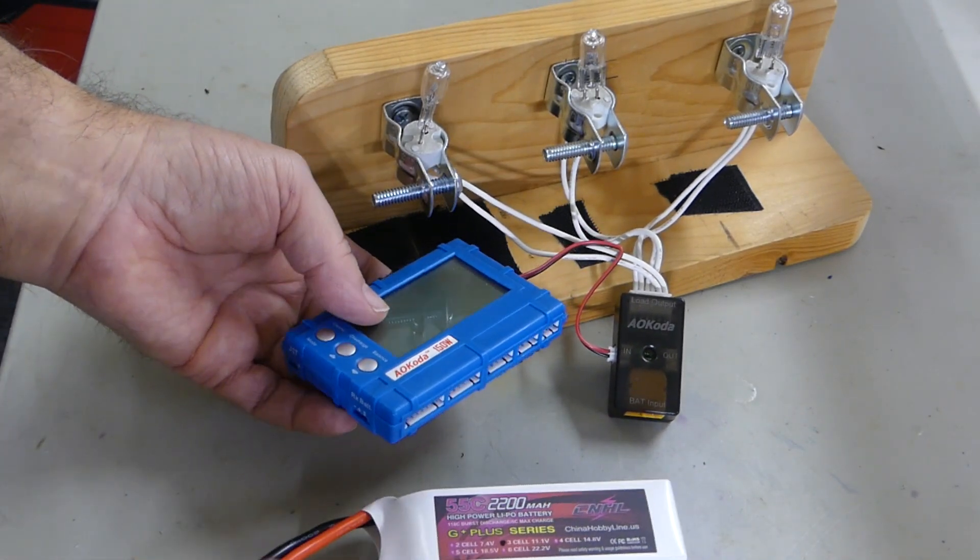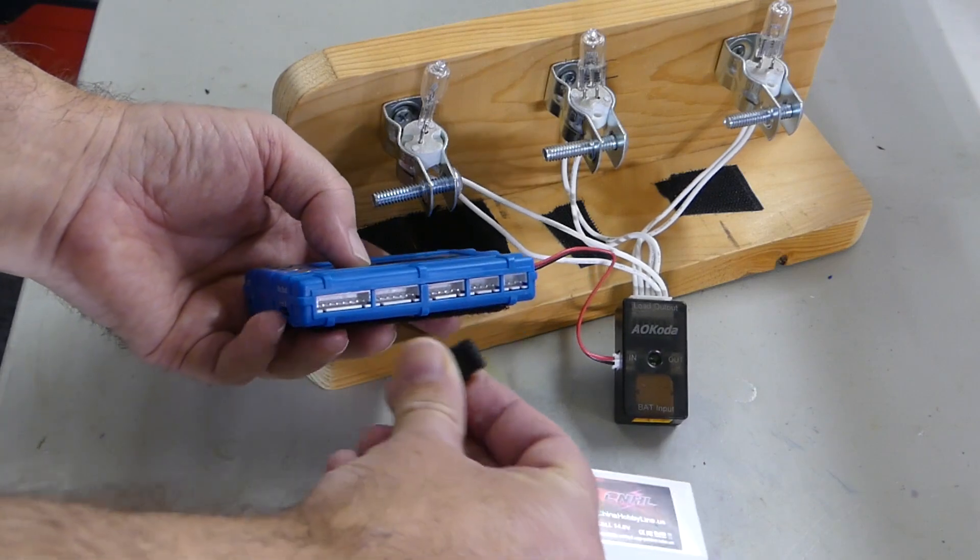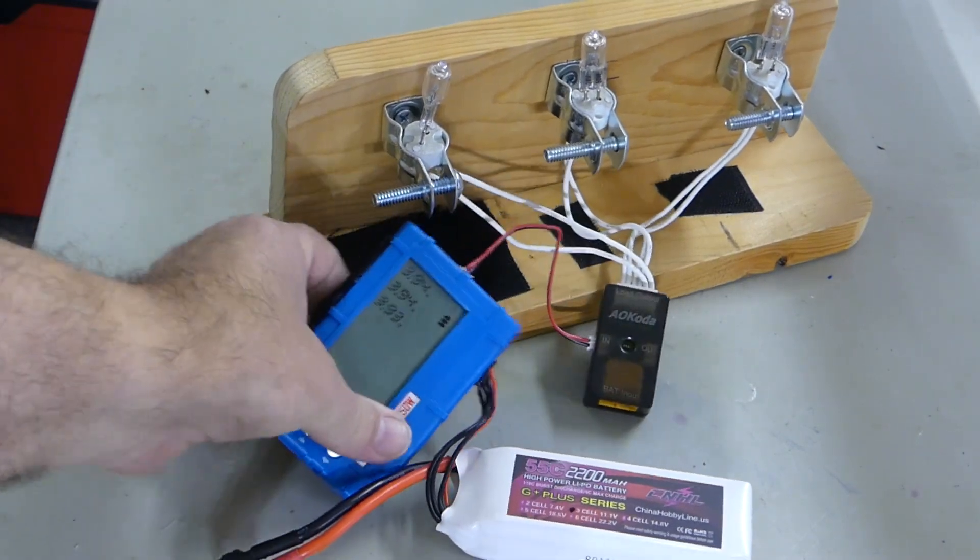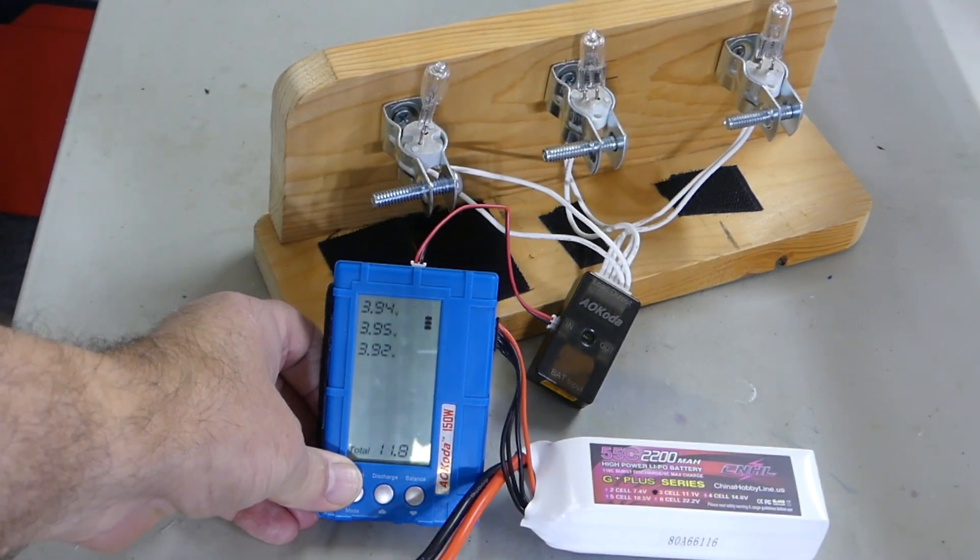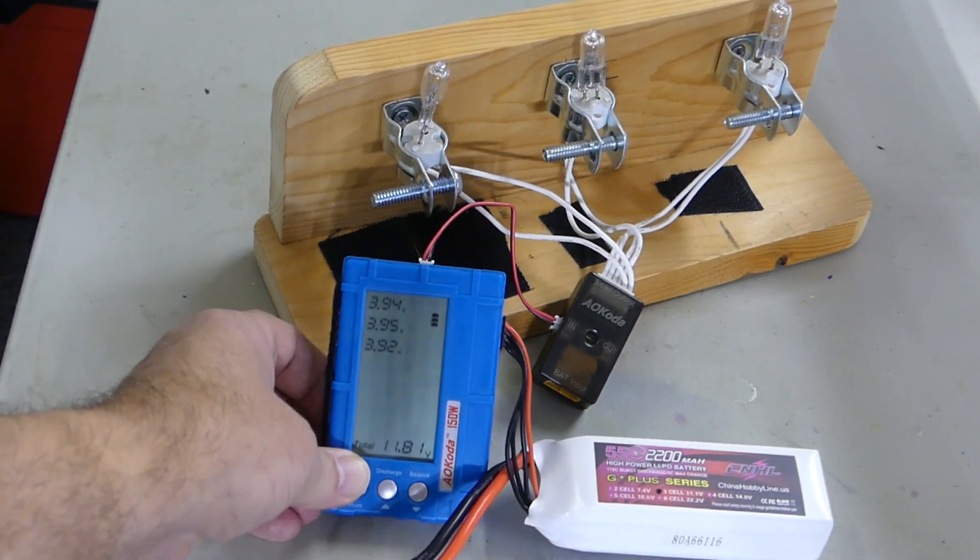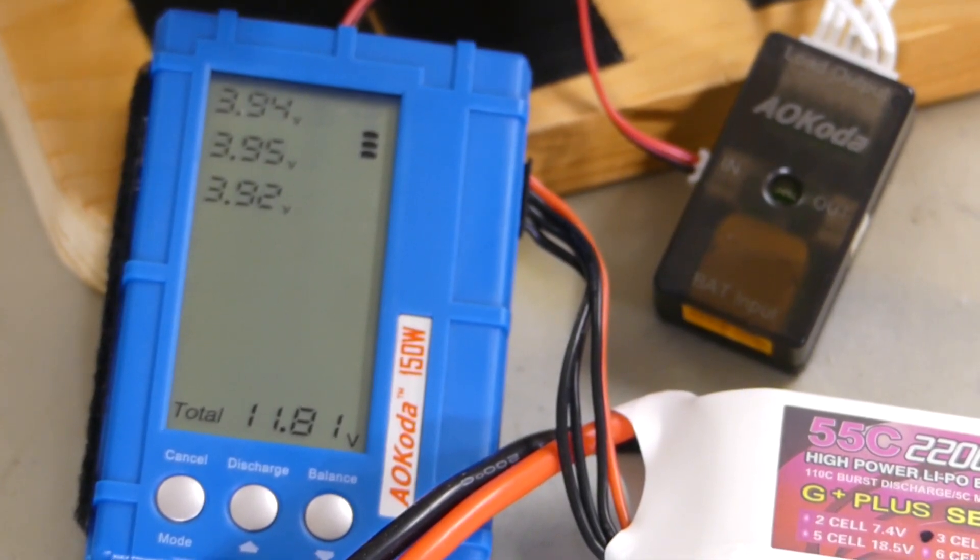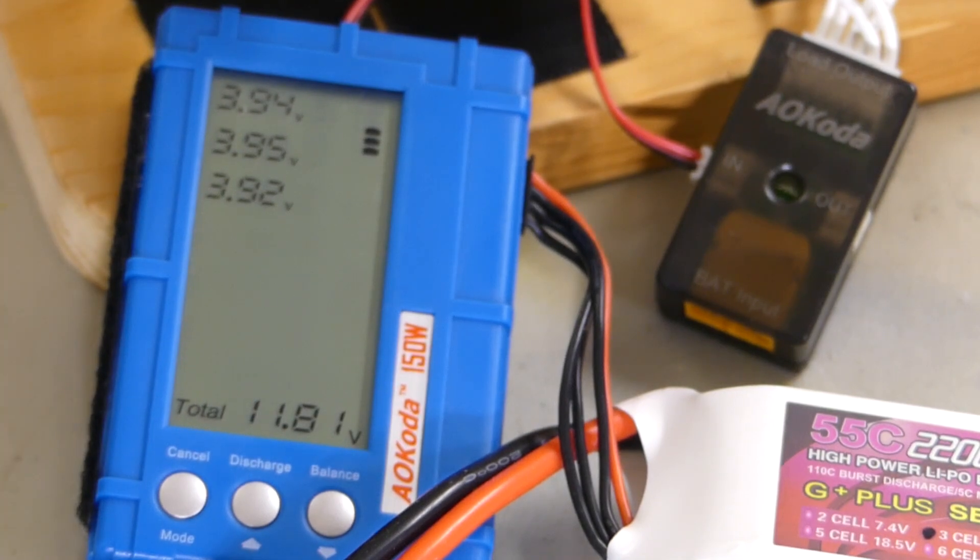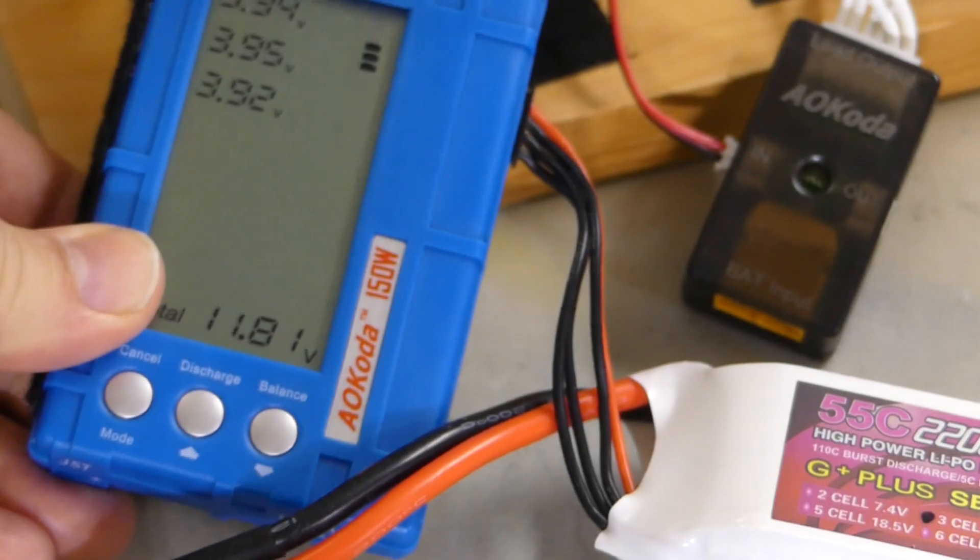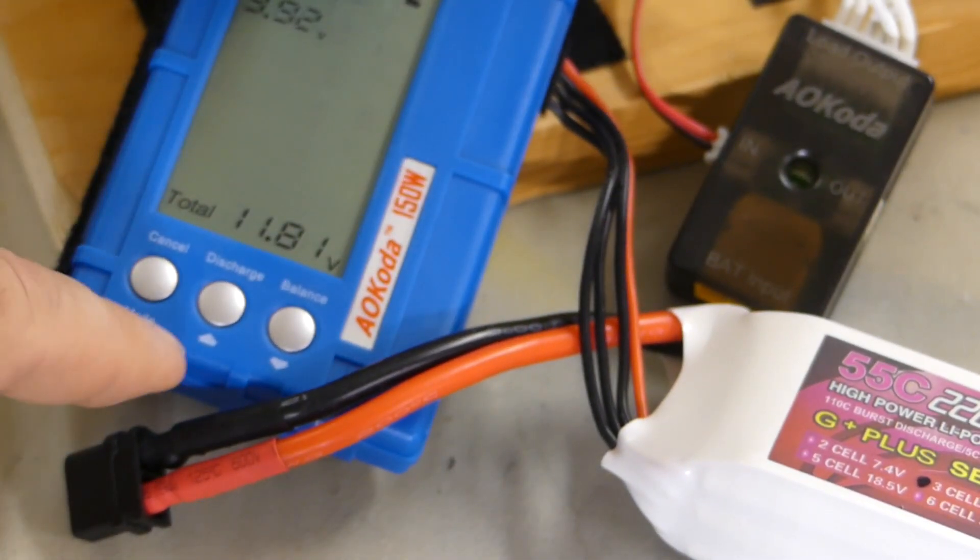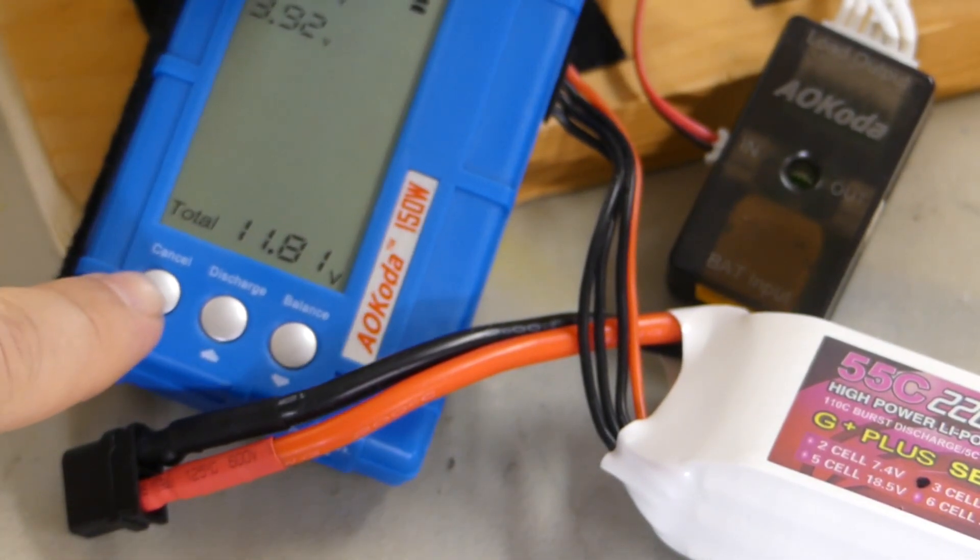I've got here a 3S from China Hobby, so we'll plug this in. We can see here this battery is one that I flew a few minutes on and when I landed it's sitting on 3.94, 3.95, and 3.92. Once you got it plugged into the correct balance port and you're looking down at your rest of your controls, you have one here that says cancel and mode.